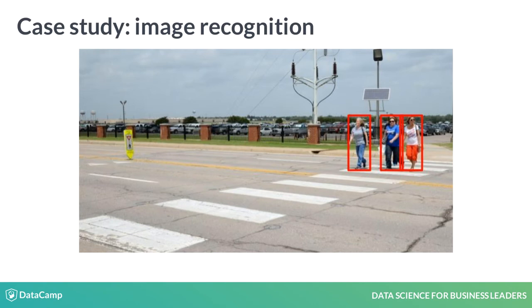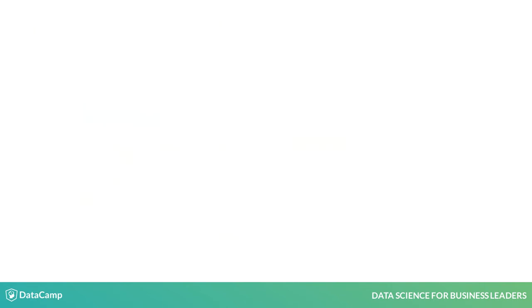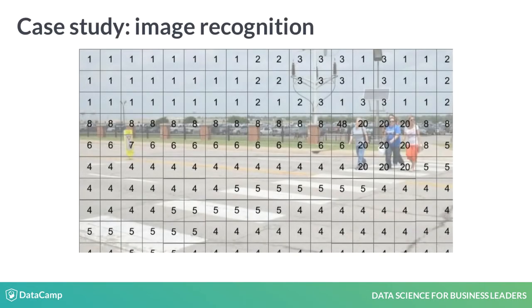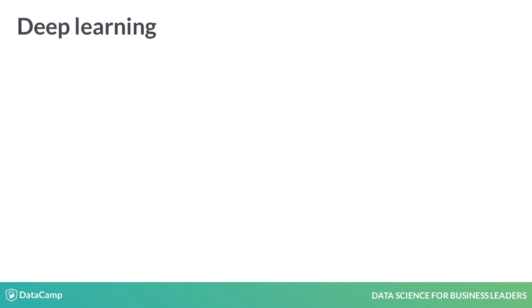Let's tackle another example. A key task for self-driving cars is identifying when an image contains a human. What would the data set be for this problem? It could express the picture as a matrix of numbers where each number represents a pixel. However, this approach would probably fail if we fed the matrix into a traditional machine learning model — there's simply too much input data. We need a more advanced algorithm known as deep learning.